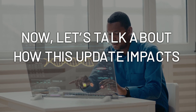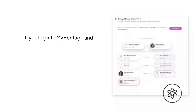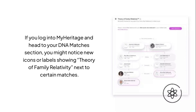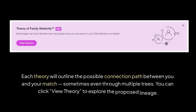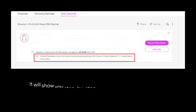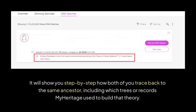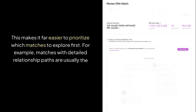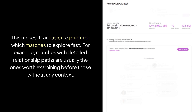Now let's talk about how this update impacts your DNA match list. If you log into MyHeritage and head to your DNA Matches section, you might notice new icons or labels showing Theory of Family Relativity next to certain matches. Each theory will outline the possible connection path between you and your match, sometimes even through multiple trees. You can click 'View Theory' to explore the proposed lineage — it will show you step by step how both of you trace back to the same ancestor, including which trees or records MyHeritage used to build that theory. This makes it far easier to prioritize which matches to explore first — matches with detailed relationship paths are usually the ones worth examining before those without any context.